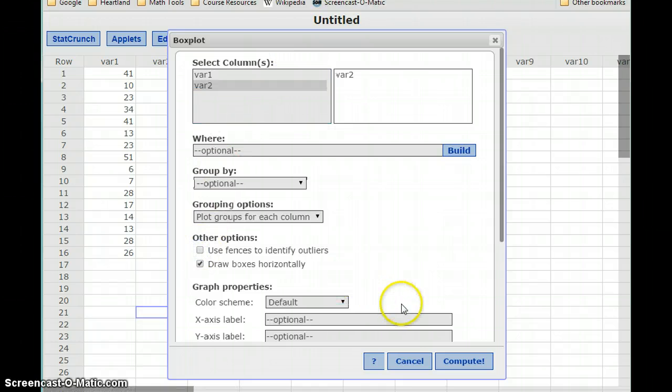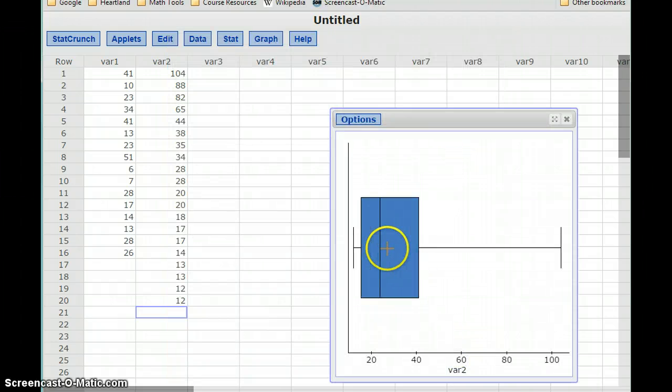If I uncheck that option, so now I'm no longer going to use fences to identify outliers, what I would get is a continuous graph that stretches all the way to that maximum value.